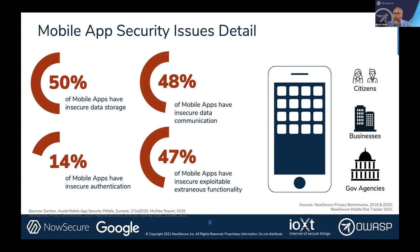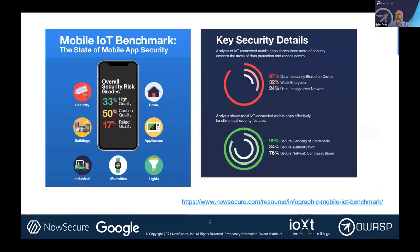If you've done pen testing in mobile, you find about half of mobile apps have insecure data storage, 48% leak data over the network, and about 47% have exploitable extraneous functionality that shouldn't be there. The good news is most apps are good at authentication and authorization. We do benchmark and analyze the app stores — I'll give you a link to the benchmark analytics at the end.